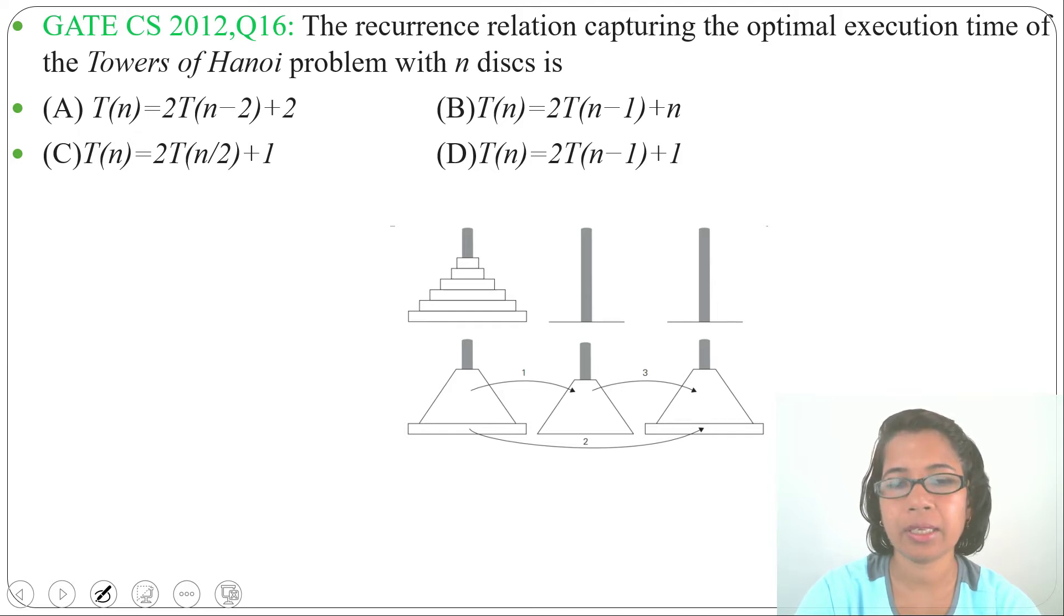In Tower of Hanoi, there are three pegs: peg 1, peg 2, and peg 3. In the first peg there will be n disks, and our target will be to move n disks from peg 1 to peg 3 by using peg 2 as an intermediate or auxiliary.